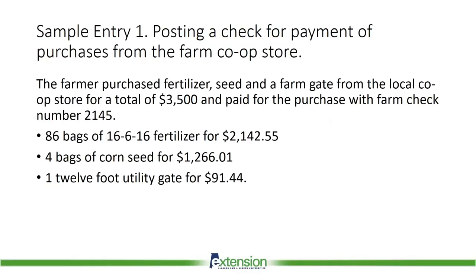Let's move into sample entry number one. Our first entry is a simple entry: paying a bill from the local co-op store with a farm check. The farmer purchased fertilizer, seed, and a farm gate from a local co-op store for $3,500 and paid with farm check number 2145. That's 86 bags of fertilizer, four bags of corn seed, and one 12-foot gate. These are sample made-up entries — the dollar amounts may not be correct for your farm. We're focused on understanding the process of keeping the books using QuickBooks.